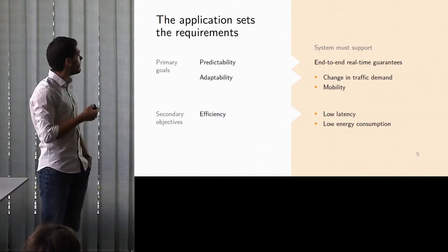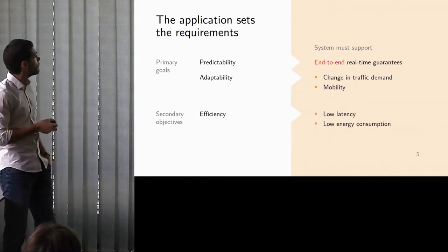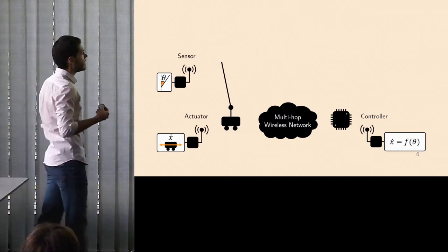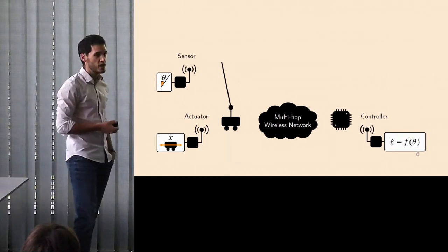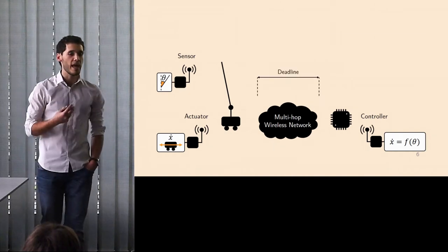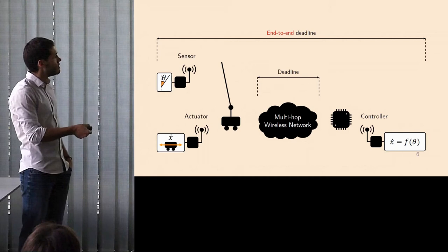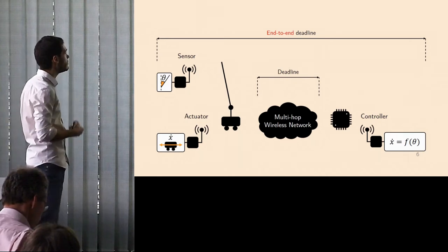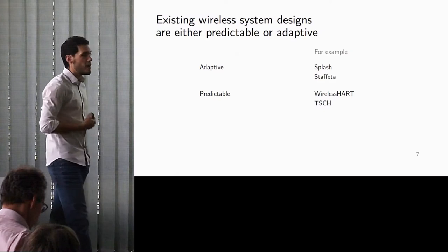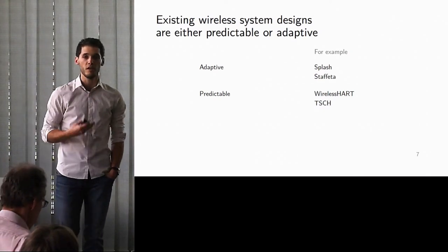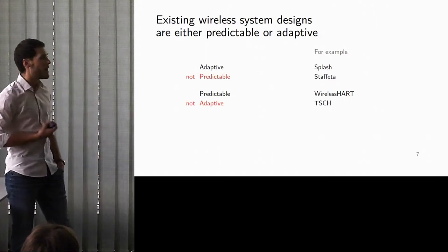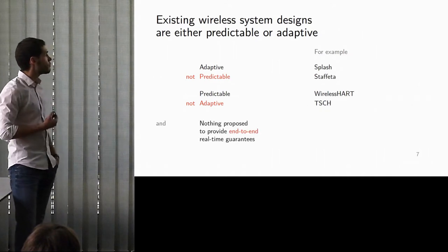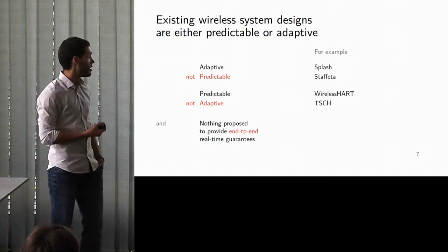The objectives for the communication system in such an application are predictability, adaptability, and efficiency. One thing that I would like to stress here at this point is that in this project we have been looking at predictability from an end-to-end perspective. What it means is that we are not only interested in meeting deadlines across the network just for the communication, but what really matters is that we can guarantee end-to-end deadline, which means that we need to be able to specify how long it will take for the application tasks to communicate with one another.